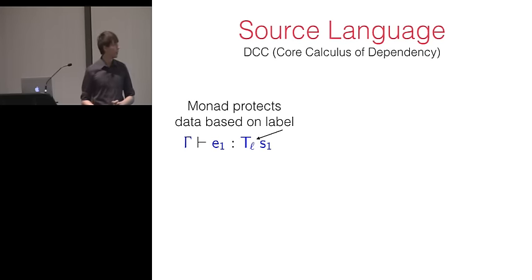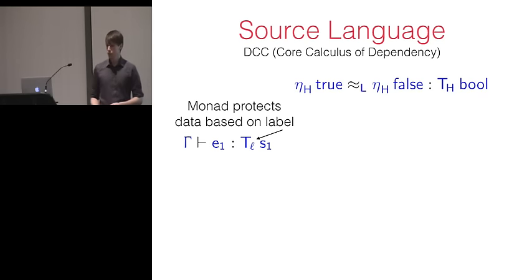So let's take a look at our source language. DCC provides this lattice of monads, so we can have terms like E1 that have monadic types, like TLS1. And this represents some protected data, S1, that's protected at level L in the lattice. If we just imagine a two-label lattice, L could be high or low, H or L. So, for instance, we can have the high-level Boolean values, eta H true and eta H false, of type TH bool. And these two values, despite having different underlying data, true and false, are indistinguishable to the low-level observer, because they've been protected.